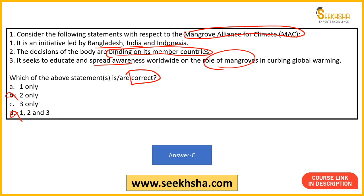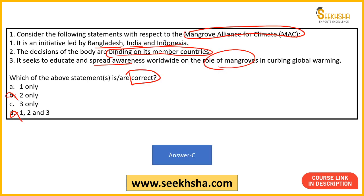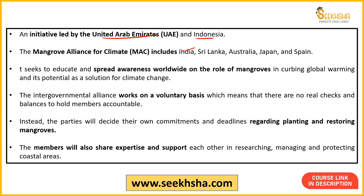This is the law of civil services paper. The correct answer is C. India is wrong here — the UAE and Indonesia lead this initiative. Members include India, Sri Lanka, Australia, Japan, and Spain. The initiative led by UAE and Indonesia focuses on spreading awareness on how mangroves work for global climate. It is an intergovernmental alliance on a voluntary basis — there is no binding or punishing element. Members commit to sharing their expertise and support related to managing and protecting coastal areas.